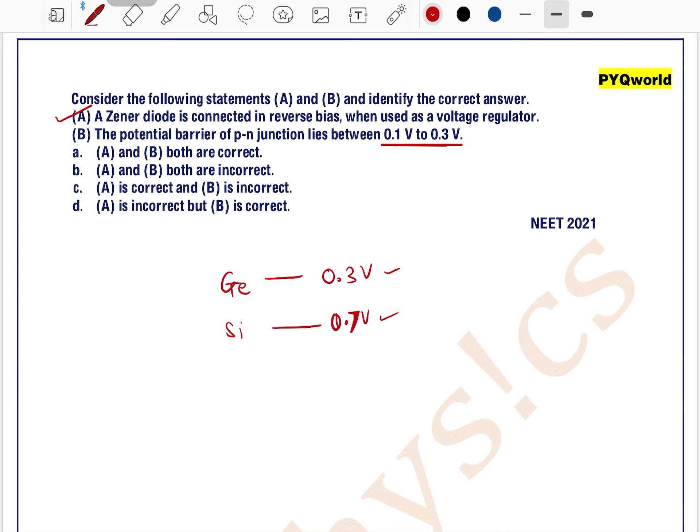So the values are out of this range, so this is incorrect. We can say option A is correct and B is incorrect. So option C is the correct answer.